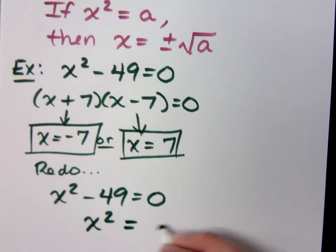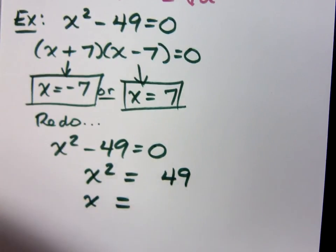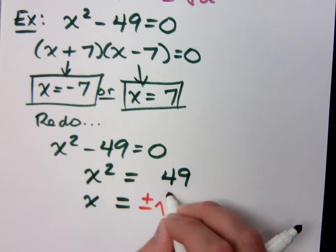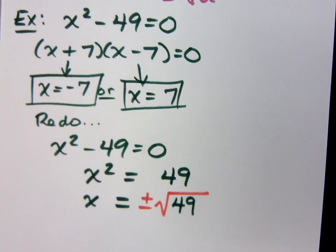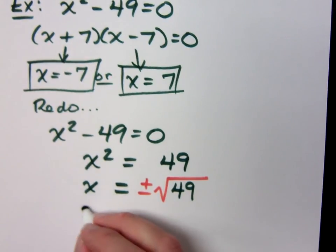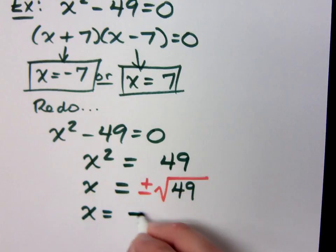We get x squared is equal to 49. And according to the square root property, that means that x should equal plus or minus the square root of 49. Do you all agree? So that means that x equals plus or minus 7.